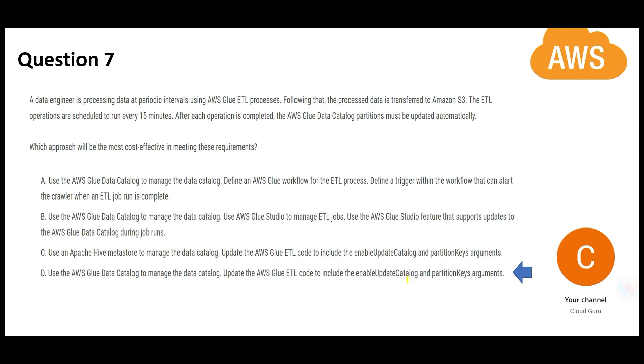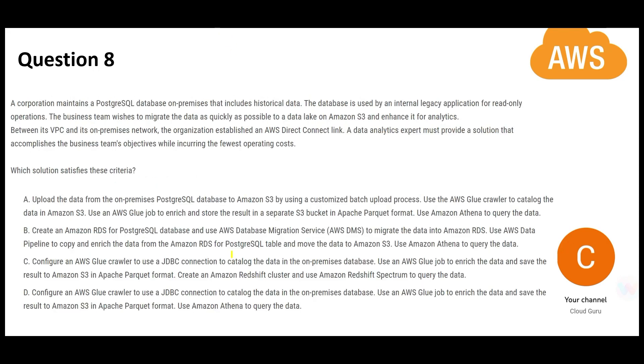Now let us move to the next question. The use case here is data migration. Had it been simple data migration, you would have chosen an option using DMS—Data Migration Service from AWS—but it is not normal data migration. Why? If you see 'enhance it for analytics,' you have to not just migrate it but enhance the data for future analytics. That is why anything to do with DMS will not work here. A is saying from on-premises you will first move to S3, then use Glue crawler. This is not needed—Glue crawler can directly work on on-premises databases.